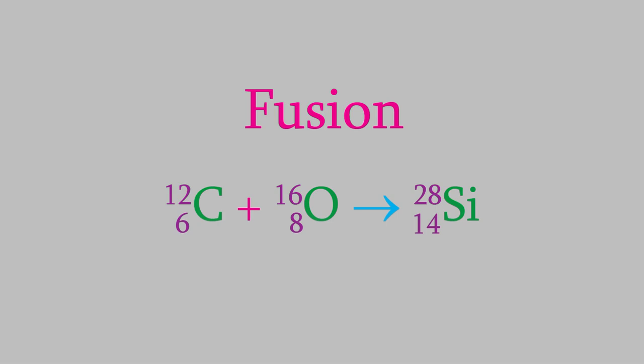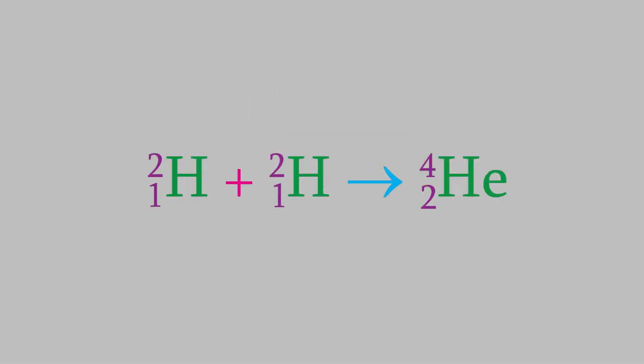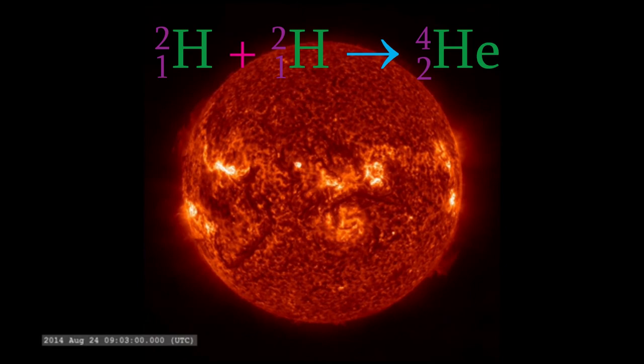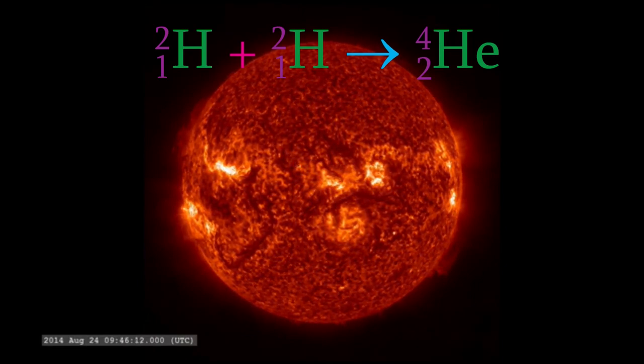One important fusion reaction is this one, in which two hydrogen-2 isotopes fuse to form a helium-4 nucleus. This is one of the fusion reactions that occurs in the sun. Much of the heat and light of the sun comes from fusion reactions between hydrogen nuclei to form helium.